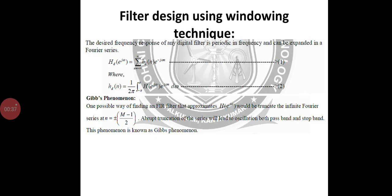What is known as Gibbs Phenomena? One possible way of finding an FIR filter that approximates h(e^(jω)) is to use the truncated finite Fourier series.